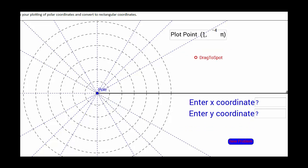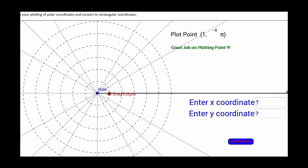In this problem, we have (1, -4π). Negative 4π means we move clockwise from the polar axis — that is 2 times around the circle and back to our polar axis — at a radius of 1. We can see that our x-coordinate is going to be 1, and our y-coordinate will be 0.